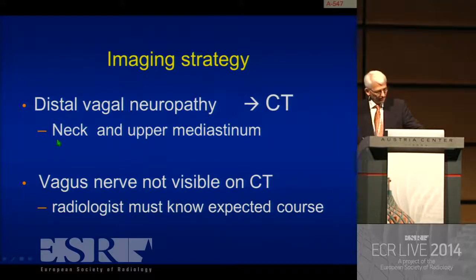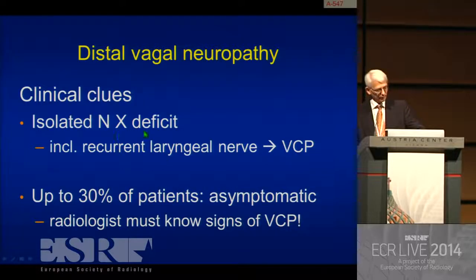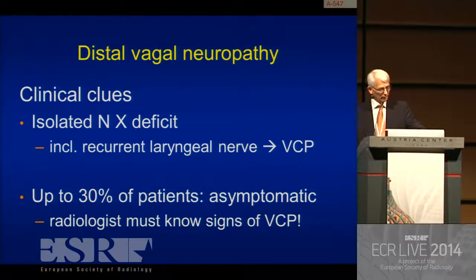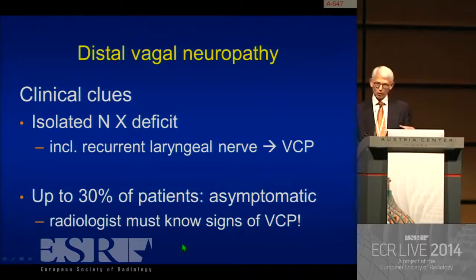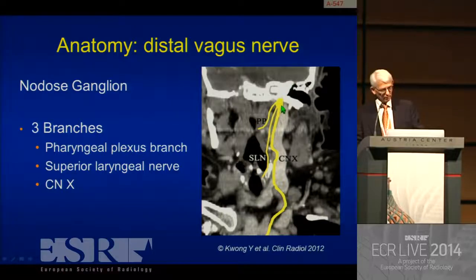Distal vagal neuropathy: the lesion should be somewhere in the neck or in the upper mediastinum, and CT is the way to go. The vagus nerve is unfortunately not visible on CT, so we should know its expected course. The clinical clue is an isolated vagus nerve deficit. If this includes the recurrent laryngeal nerve, you will have a vocal cord paralysis on that side. Please note that up to 30% of these patients are asymptomatic — they are not hoarse — because of successful compensation of the other cord. Just below the skull base, we have the nodose ganglion. From there, three important branches: the pharyngeal plexus branch providing sensation to the pharynx, the superior laryngeal nerve providing sensation to the supraglottic larynx, and most importantly, cranial nerve 10.